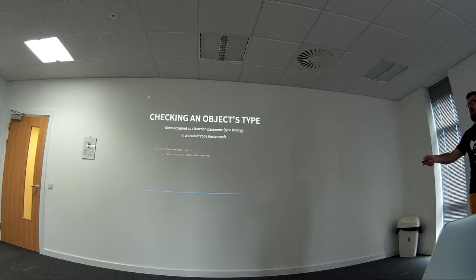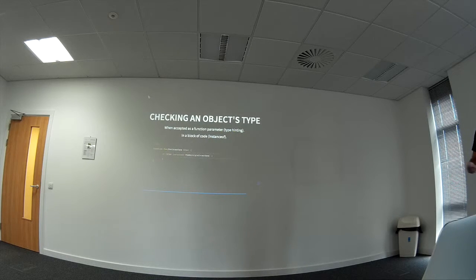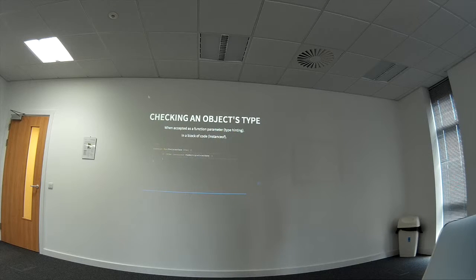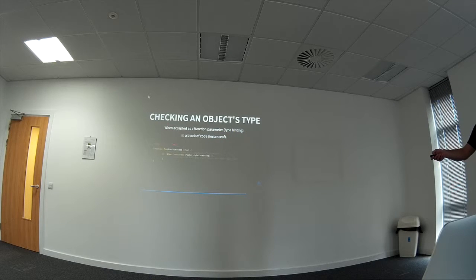The other way to check an object's type is instanceof. In this case, a function works for any object that implements FooInterface, but it has a special case: if it also implements FooMultipleInterface, do one extra thing. An IDE will automatically give you auto-completion and error checking for methods of FooMultipleInterface inside that block. Things fail early — if you don't do type hinting, something might fail five function calls later instead of at the source.